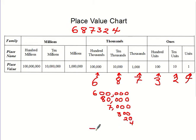Four, and when you add them together, of course, you know what will happen, we get our number back. Four, two, three, seven, eight, six, 687,324.